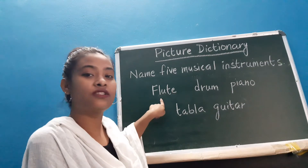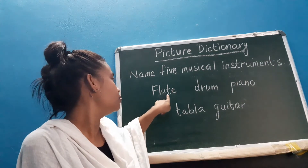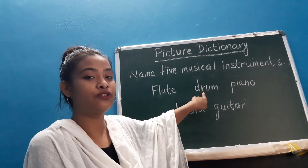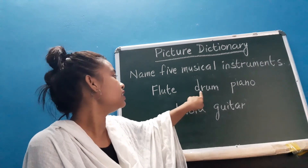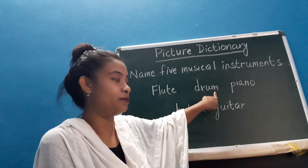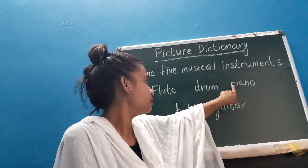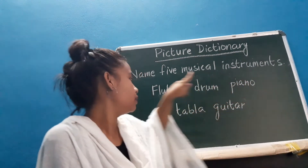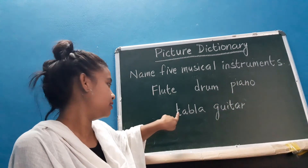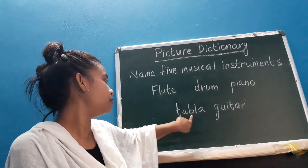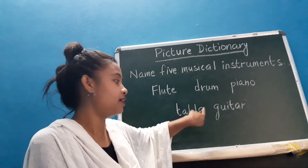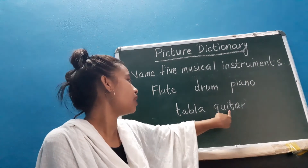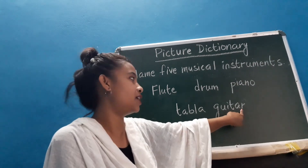First is flute: F-L-U-T-E, flute. Next is drum: D-R-U-M, drum. Next is piano: P-I-A-N-O, piano. And next is tabla: T-A-B-L-A, tabla. And the last one is guitar: G-U-I-T-A-R, guitar.